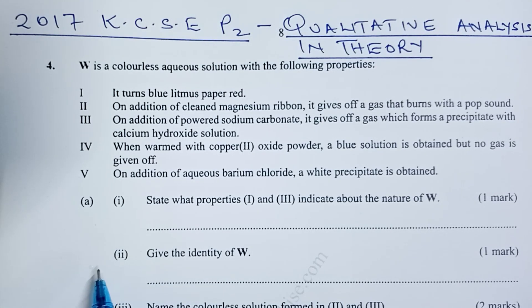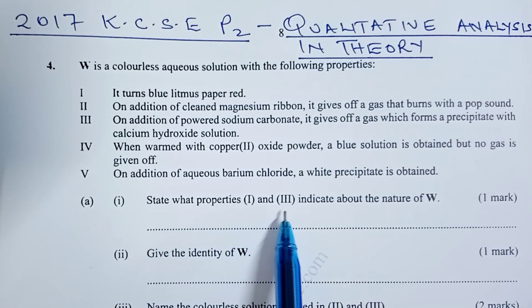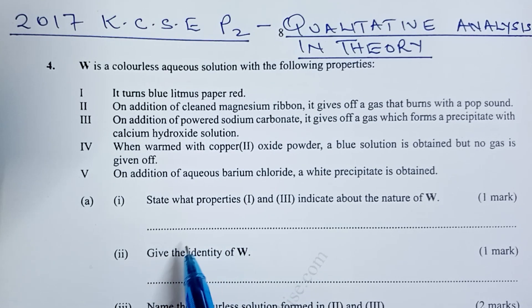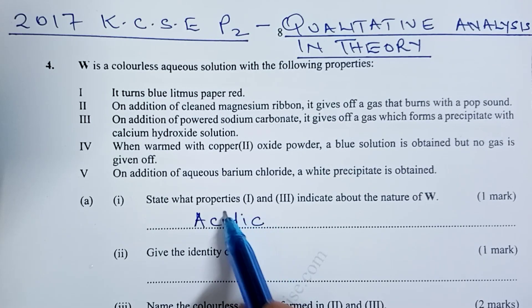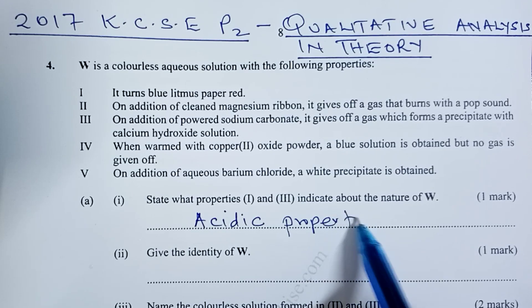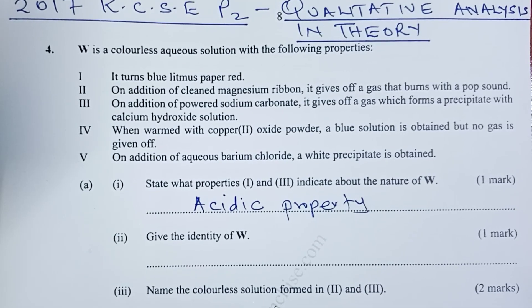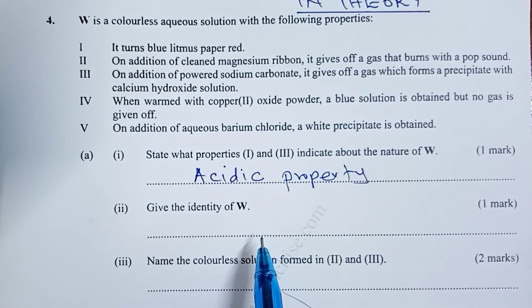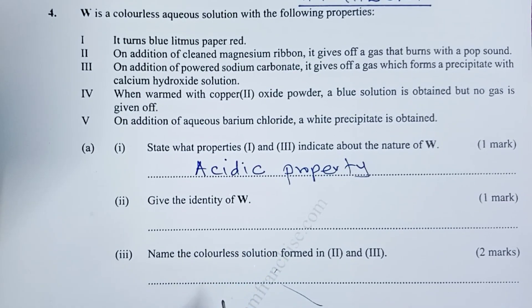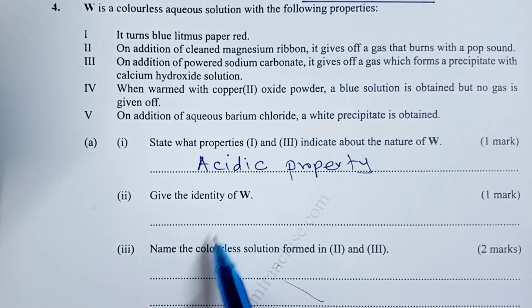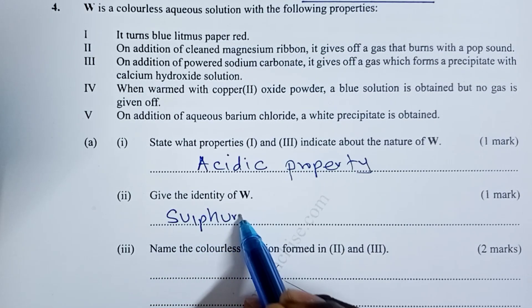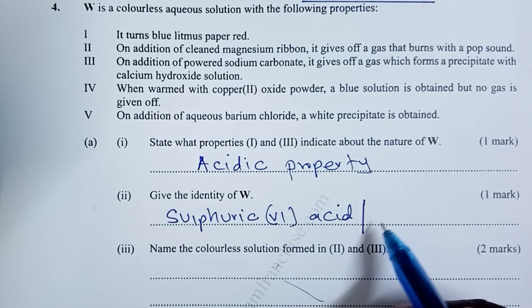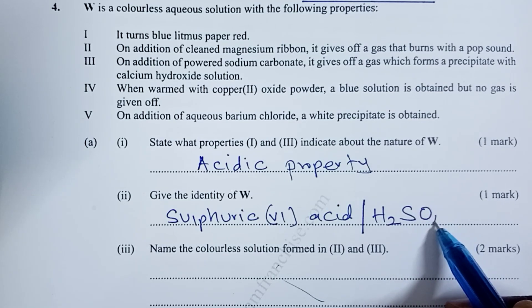So part A Roman 1, we are asked to state what properties 1 and 3 indicate about the nature of W. And I believe we have agreed from our discussion that the property here is that W is showing acidic properties. Then Roman 2 of part A, we are being asked to give the identity of W. And here we have been able to answer that the only acidic solution that contains sulfate ions is sulfuric acid in its dilute form. So W is actually sulfuric acid H2SO4. Because we've been told to identify, we may also allow the formula.